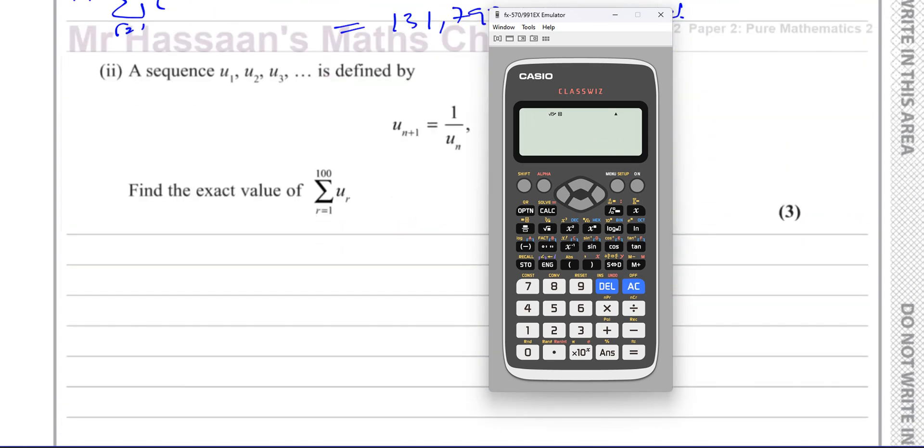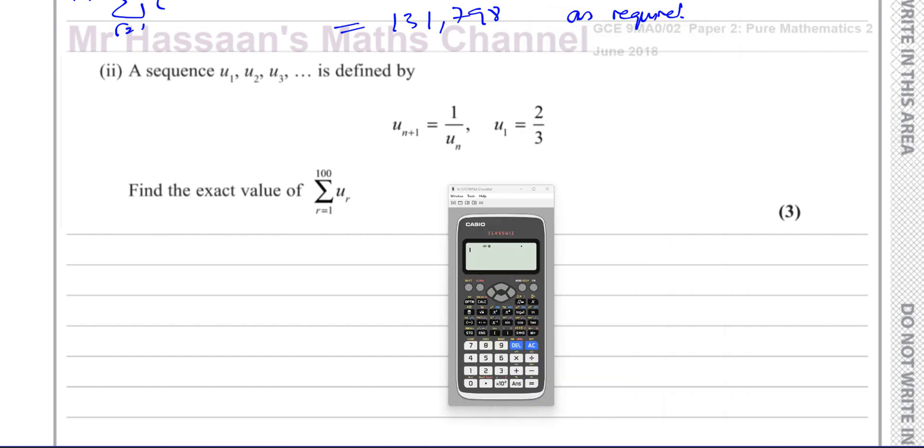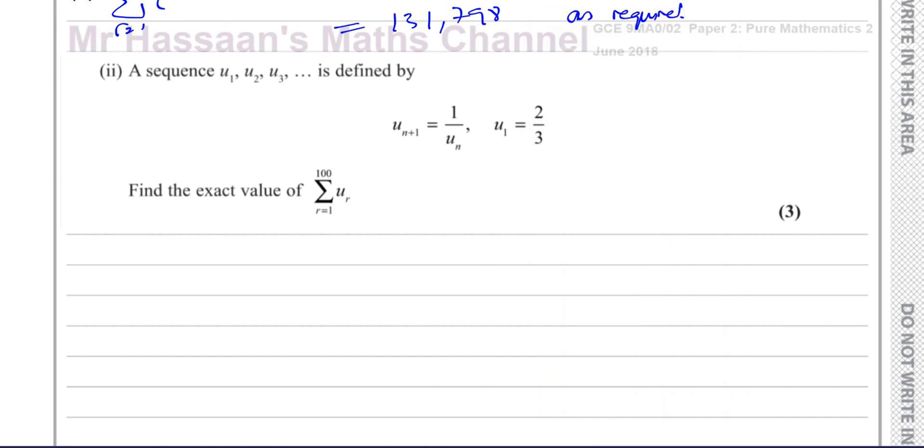All right, now for part 2. It says a sequence U1, U2, U3 is defined by U_n+1 equals 1 over U_n and U1 equals two thirds. Find the exact value of the sum from R equals 1 to 100 of UR. So what they're asking us to find is the sum from R equals 1 to 100 of UR, which means you've got to add U1 plus U2 plus U3 plus U4 all the way up to U99 plus U100. So you've got to add up all the first 100 terms of this sequence.